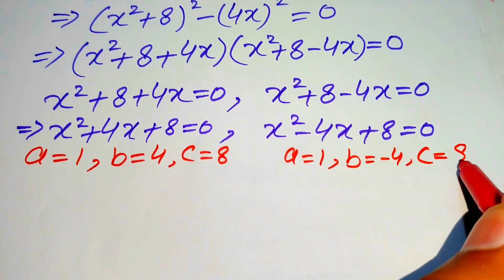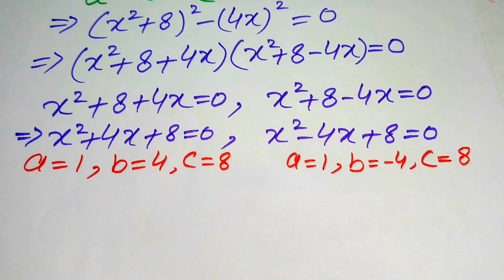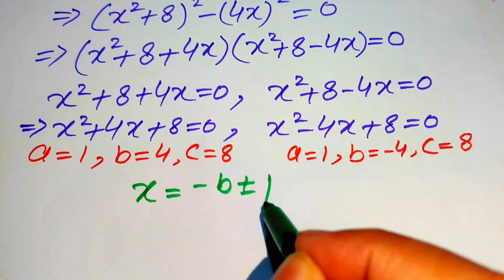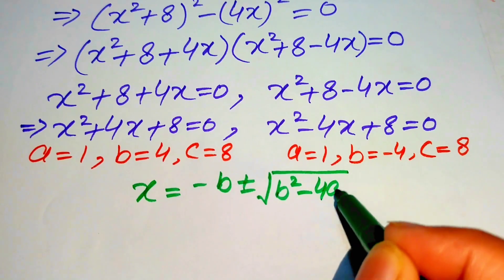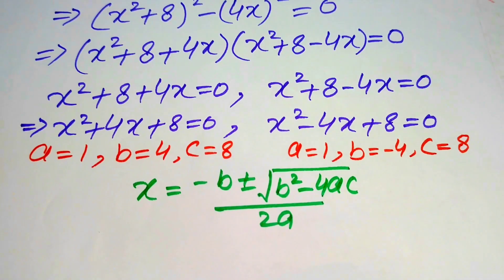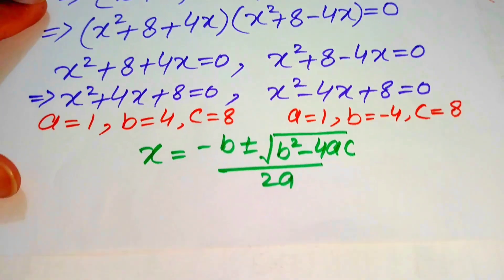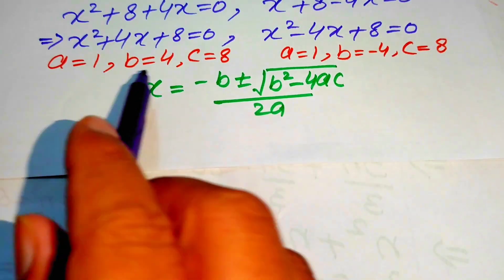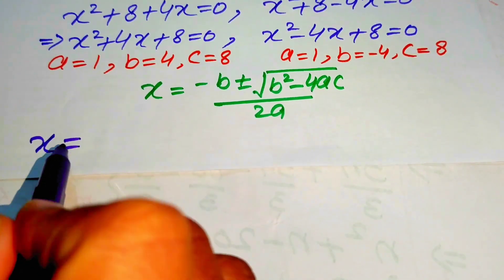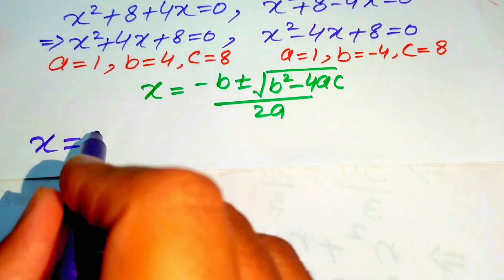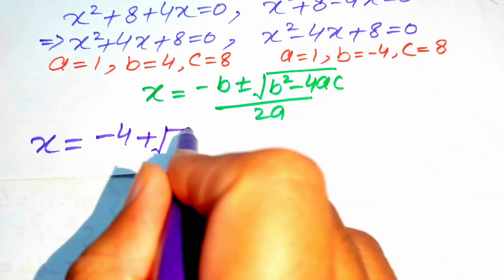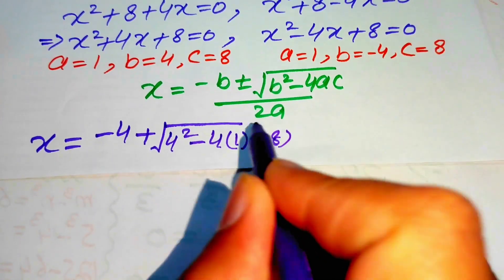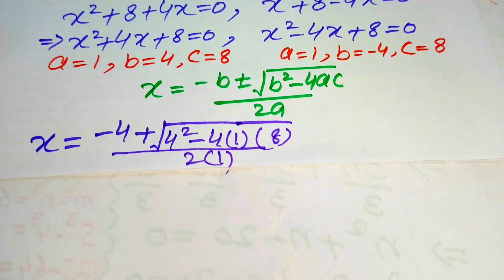For case two, a equals 1, b equals minus 4, and c equals 8. The quadratic formula is x equals minus b plus or minus square root of b squared minus 4ac, divided by 2a. We substitute the case-one values: x equals minus 4 plus or minus square root of 4 squared minus 4 times 1 times 8, all divided by 2 times 1.